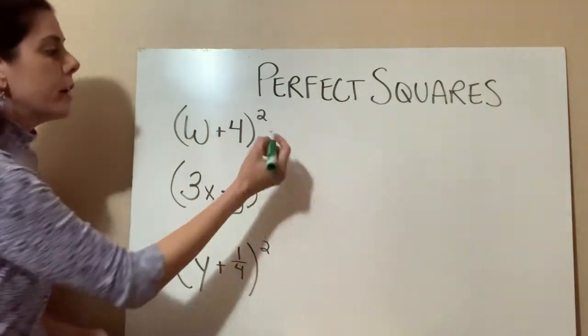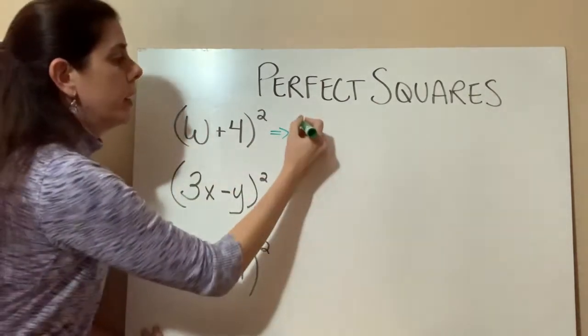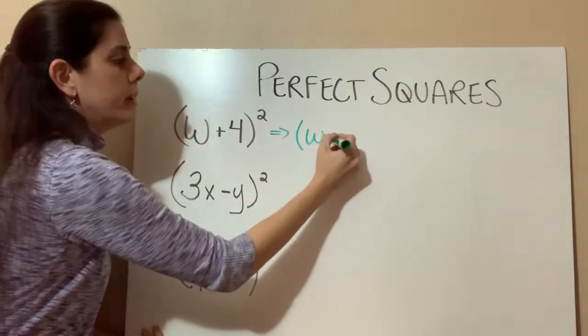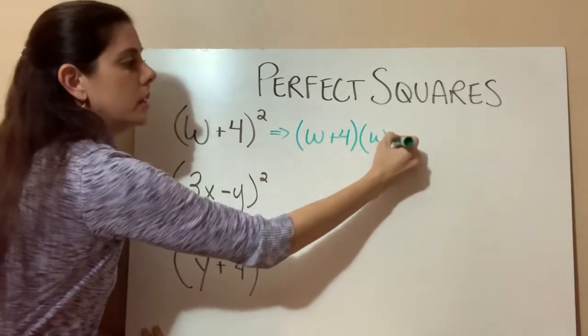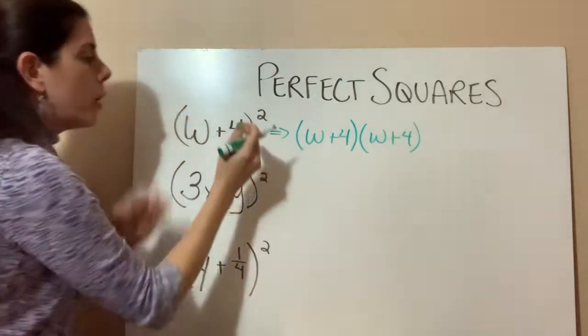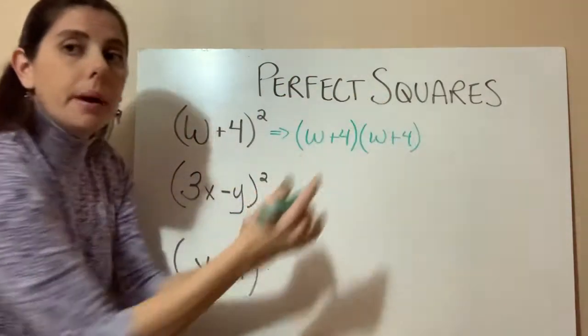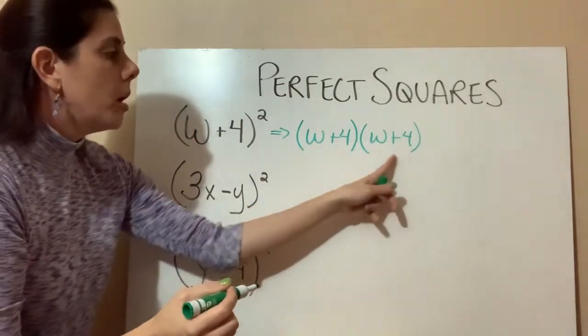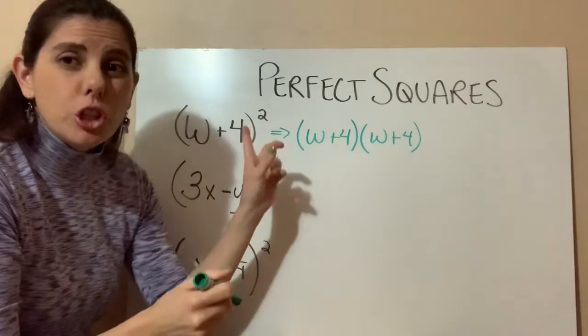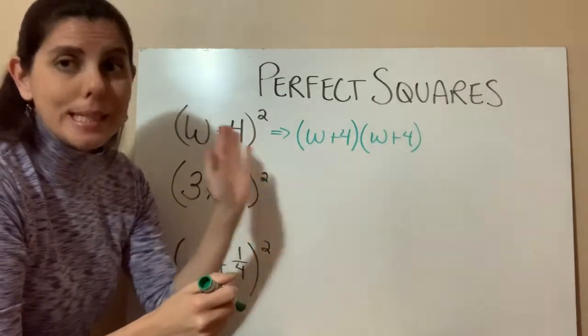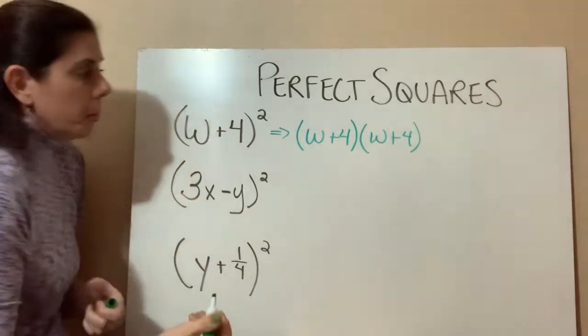So looking at our first one, if we have w plus 4 squared, what we're actually going to do is have w plus 4 times w plus 4. We're taking everything that's inside the parentheses and multiplying it by itself. So we're going to come up with a binomial square, meaning that we have two binomials and they're exactly the same.